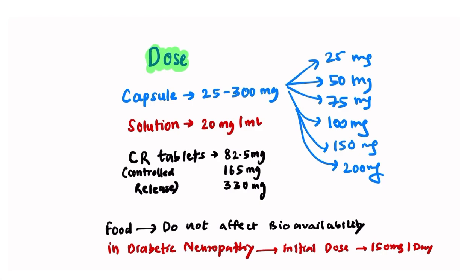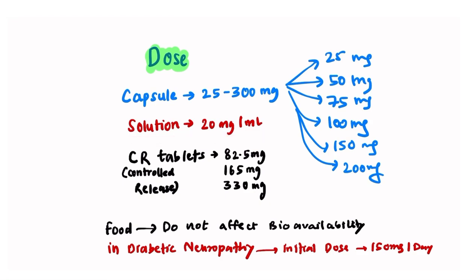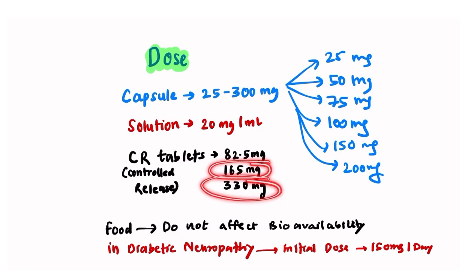Pregabalin is available in several formulations. It comes as capsules ranging from 225 mg to 300 mg. It is also available as an oral solution at 20 mg per ml. Additionally, it is available as controlled-release tablets at doses of 82.5 mg, 165 mg, and 330 mg.